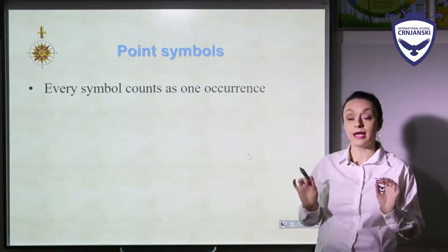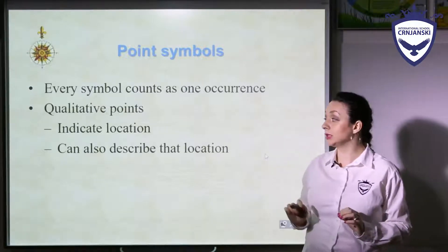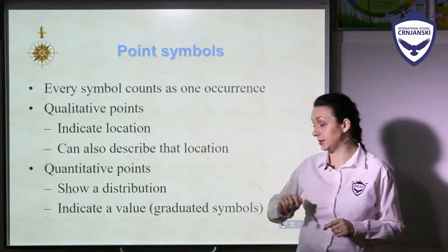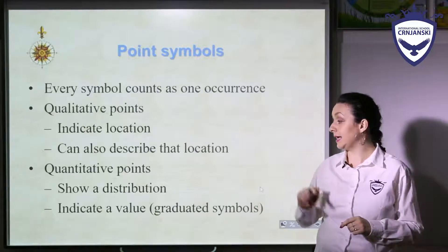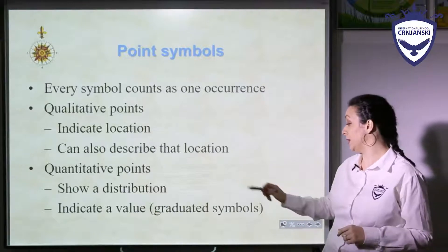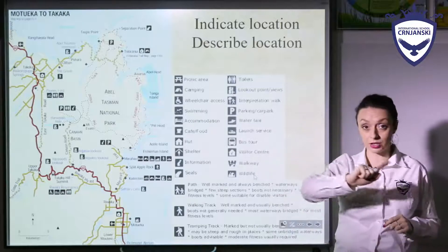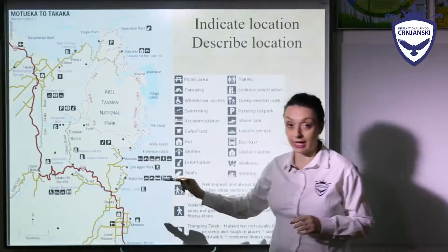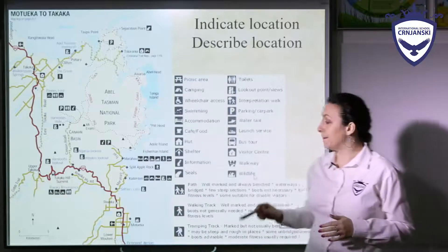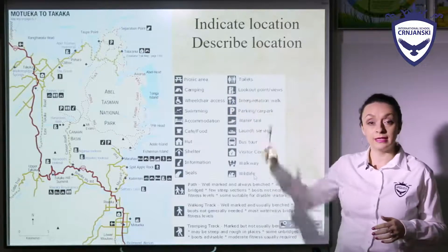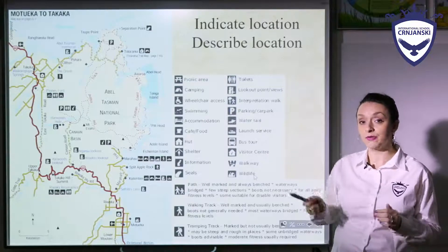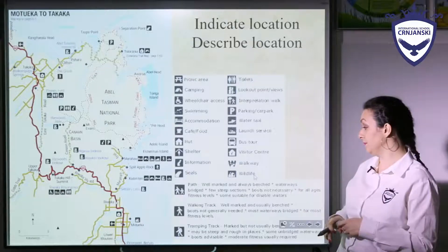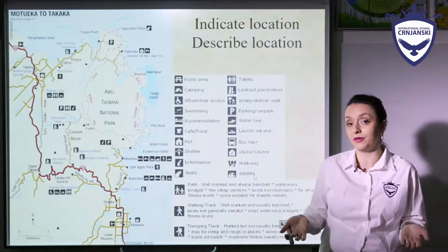For point symbols, every symbol counts as one occurrence. There are qualitative points, which indicate location and can also describe that location, and quantitative points, which show a distribution and can indicate a value of something — for example, graduated symbols. For indicate-location symbols and describe-location symbols, you have these symbols applied on different parts of the map, with an explanation of what they mean — most often you need some kind of key to understand what you are reading on the map.